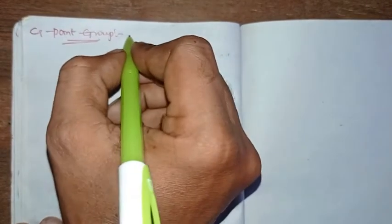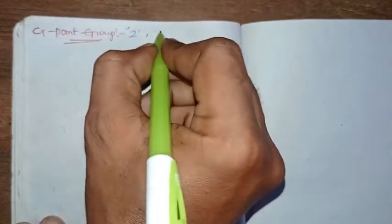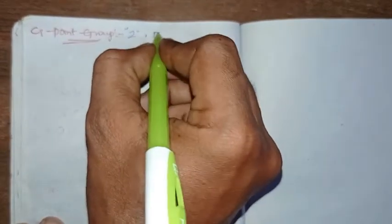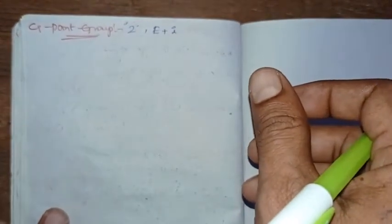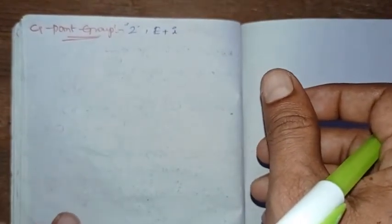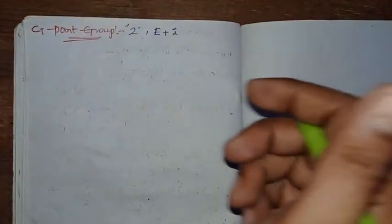Hi, hello everyone. In this session of class, I would like to explain the CI point group. The CI point group order will be 2, and it consists of the elements E plus I. This particular point group will have the group of identity and inversion center.